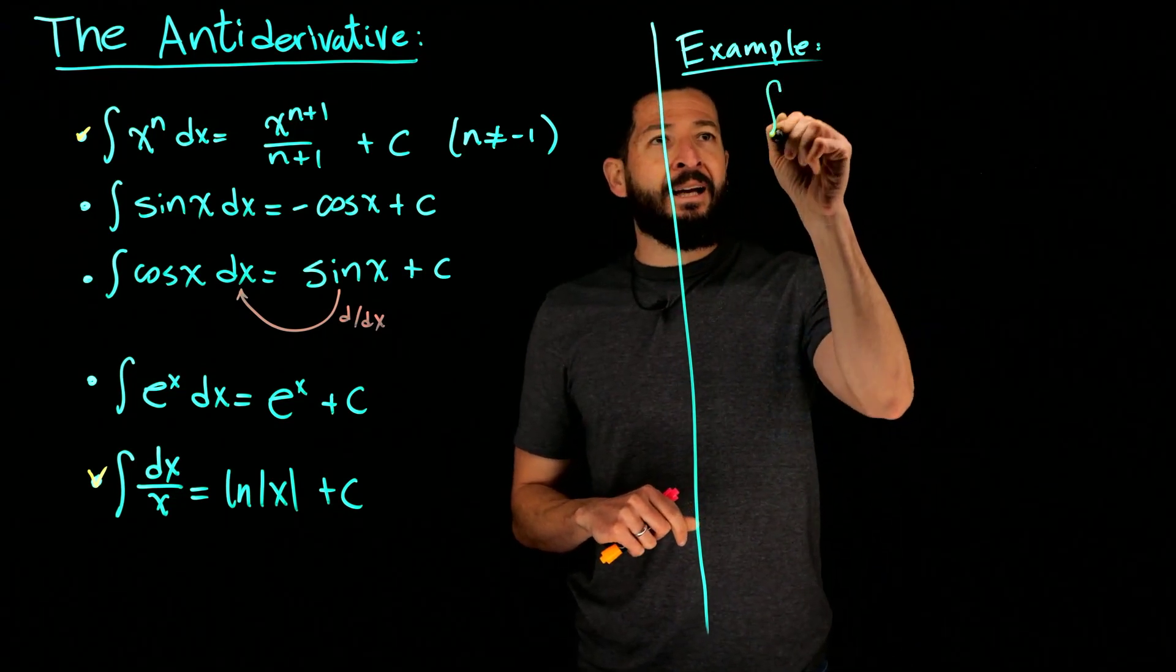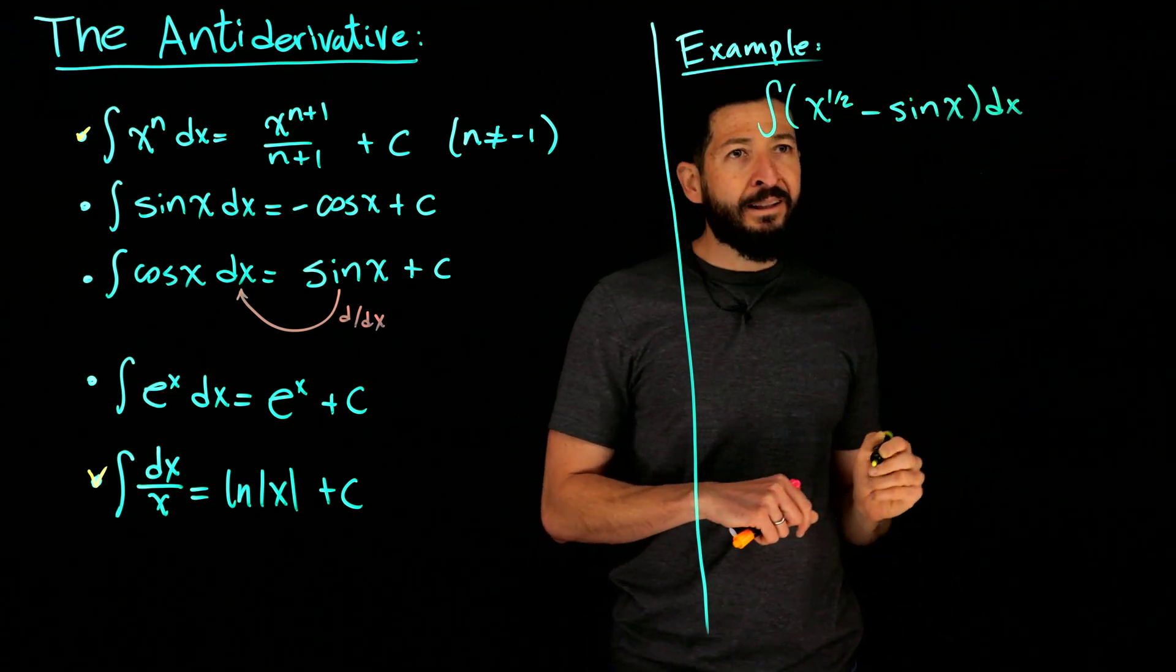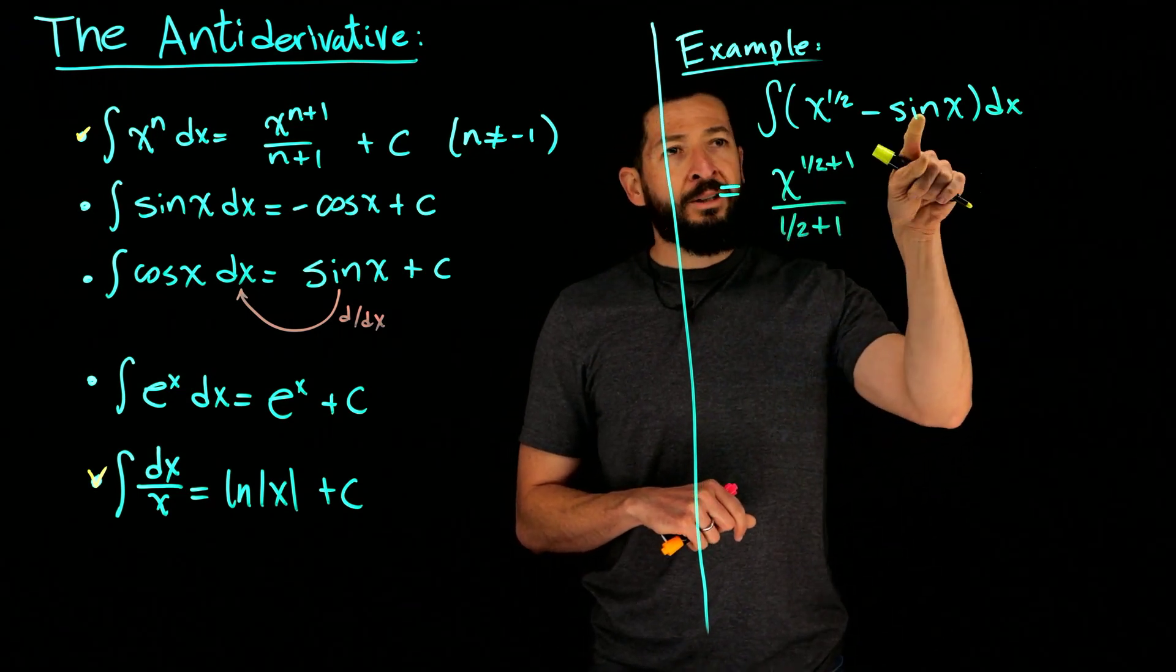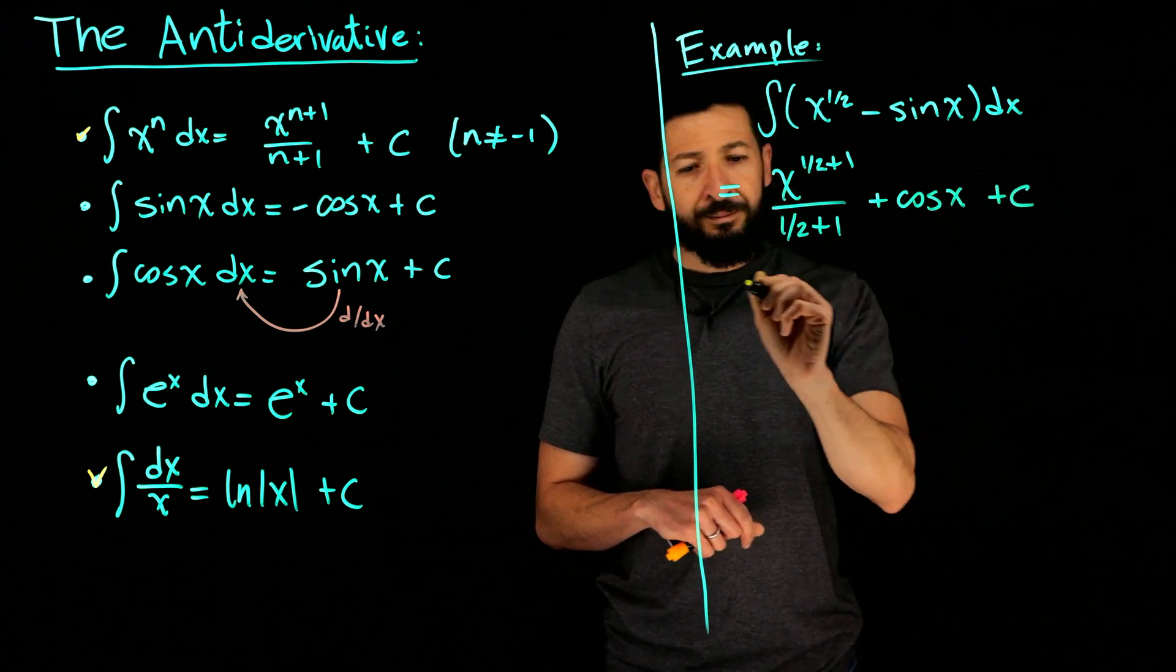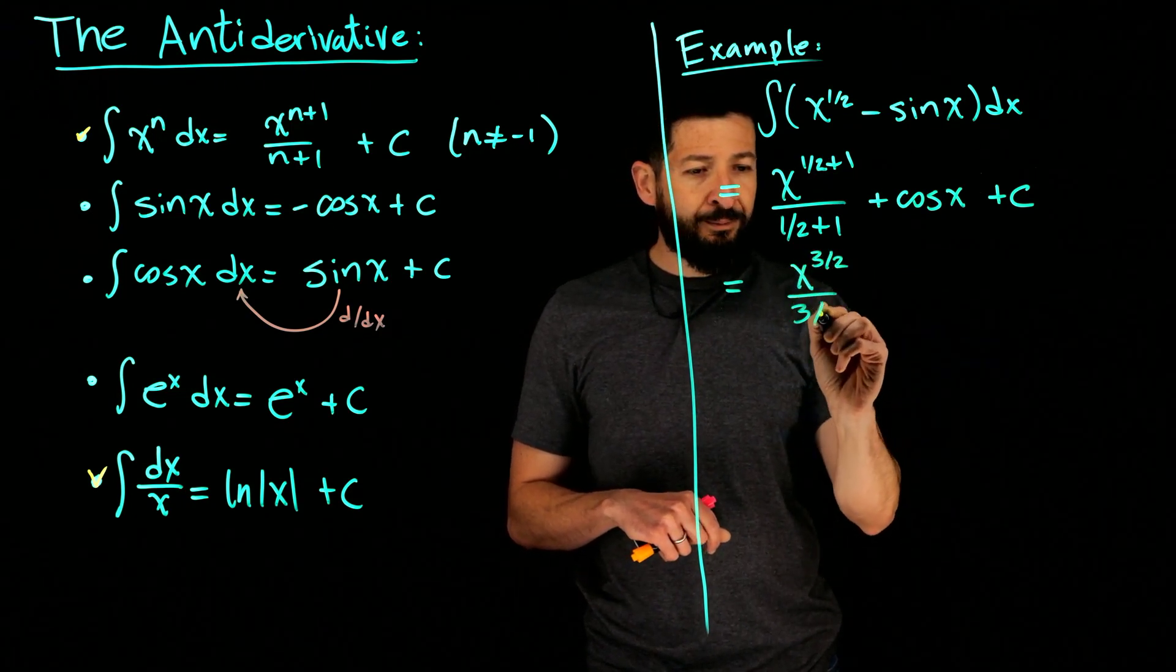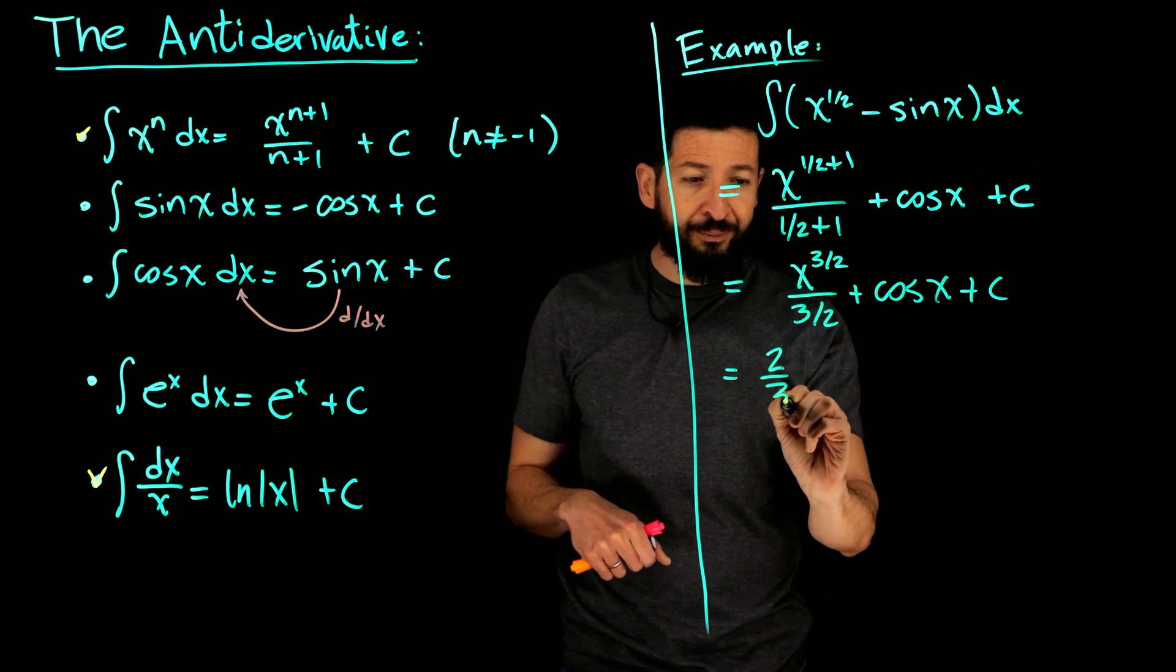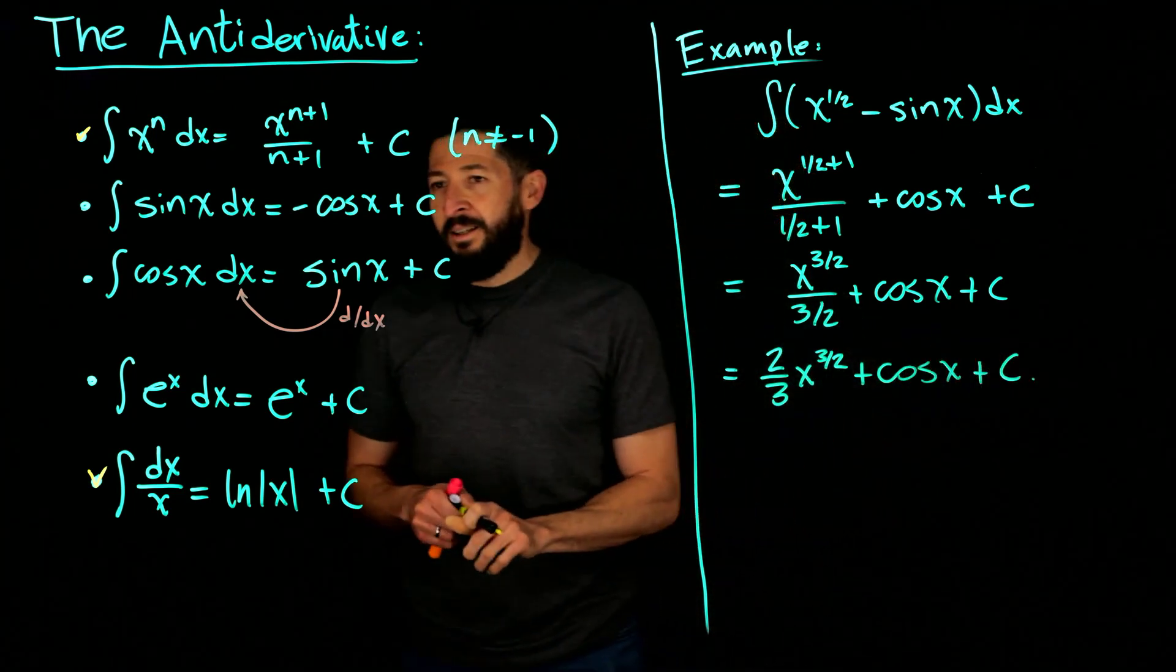All right, so let's do one last one, and let's do something like x to one-half minus sine of x, for example. This is also known as the square root, but I already put it in the form that I needed. So here you would do x to one-half plus one, over one-half plus one. And then here, remember, derivative of the sine is cosine, so the anti-derivative, negative cosine. That's how it works for me. And then you get here, one-half plus one is going to be three-halves over three-halves plus the cosine of x plus c. And then this one dividing by three-halves is the same as multiplying times the reciprocal of three-halves, which is two-thirds. Looks a bit nicer that way. Plus a constant c. And that's about that.